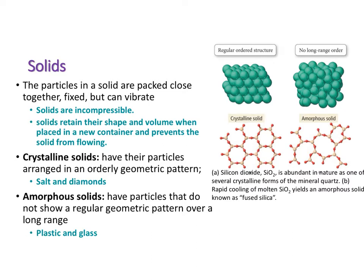Starting off with some basics about solids: they're incompressible, meaning they can't be compressed — they're already very structured and rigid. Solids retain their shape and their volume when placed in a new container, so they don't flow. There are two major types of solids: crystalline solids and amorphous solids.